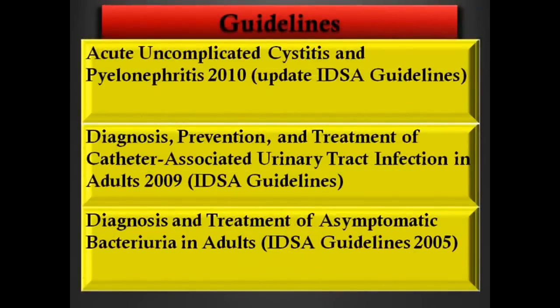These are the three guidelines. The first, about uncomplicated cystitis and pyelonephritis, is an update of the 1999 guidelines, updated in 2010. The guideline for catheter-associated urinary tract infections was made in 2009. Regarding asymptomatic bacteriuria, we have guidelines from 2005 with no recent updates.